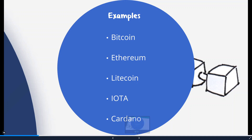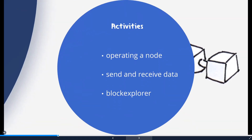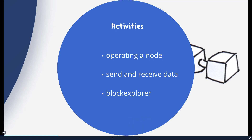I would consider the public blockchain the most popular and most decentralized type. The activities it covers mainly include three things: generating coins or tokens by mining or staking, operating a node in a network to send and receive transactions, and checking the block in a blockchain explorer.